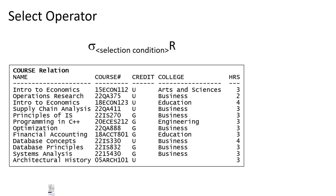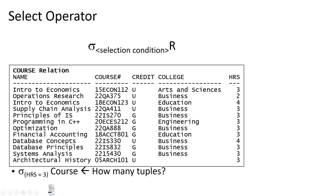Imagine that for relation R we are working with the relation 'course.' We want to select from this relation where some criteria is true. Here's a relational algebra expression: select from course where 'hours equals three' evaluates to true. For every tuple we ask whether this expression evaluates to true. For the first tuple, Intro to Economics, hours equals three — true. The next tuple has hours equal to two — is two equal to three? No, that's false. Four does not equal three — also false.